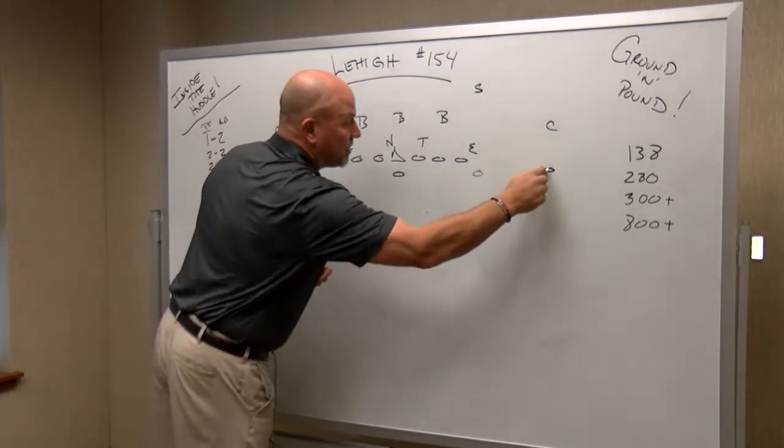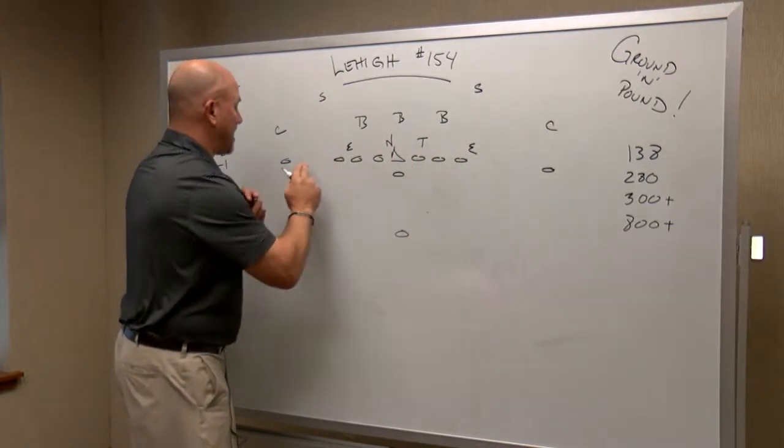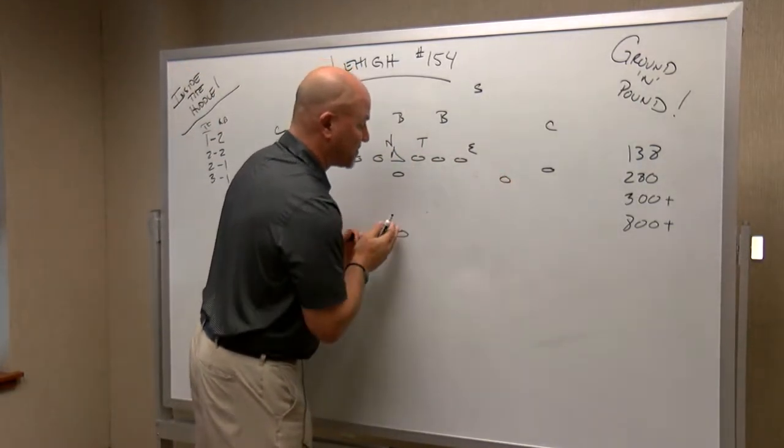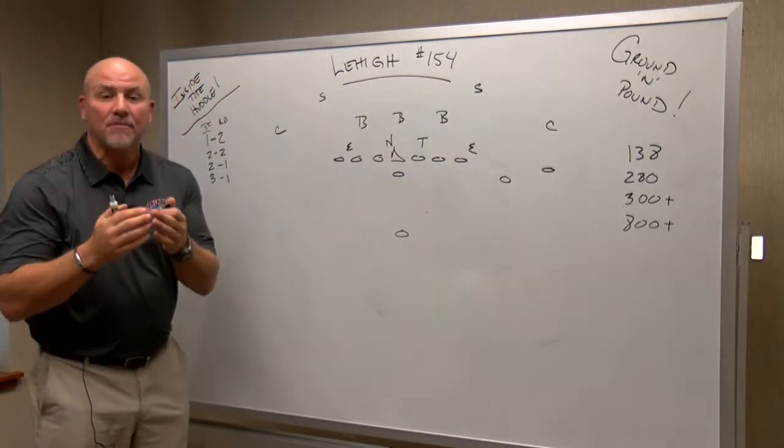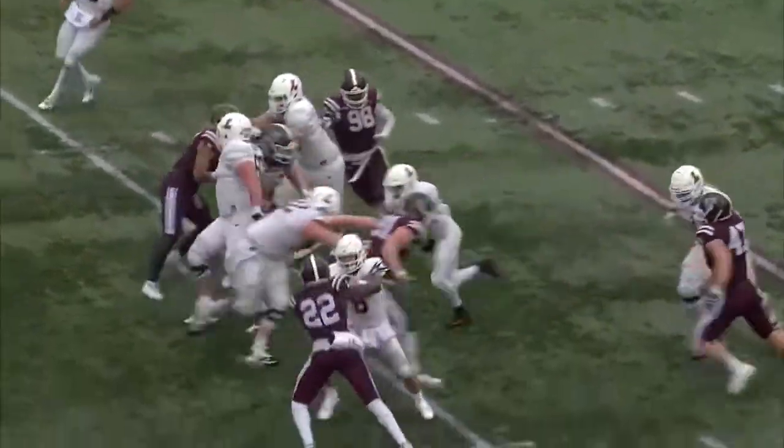So you could go two tight ends here and one back, a flush formation, two tight ends. You could put both receivers on one side, again creating big running surfaces for guys like C.J. Emile and Selwyn Simpson.